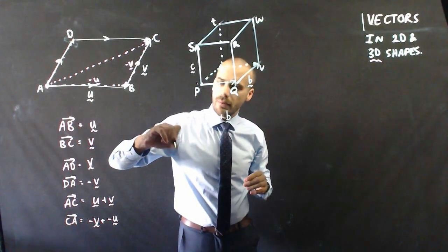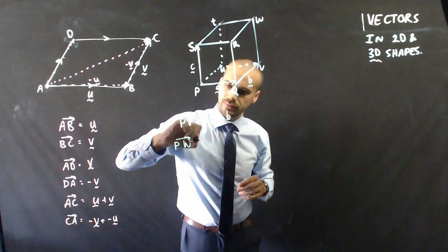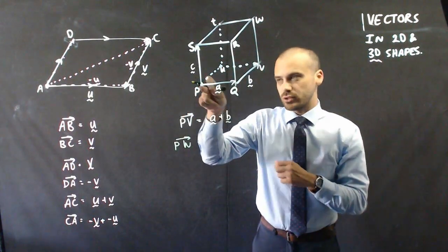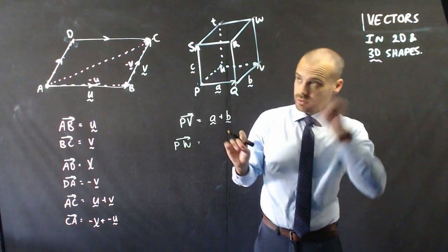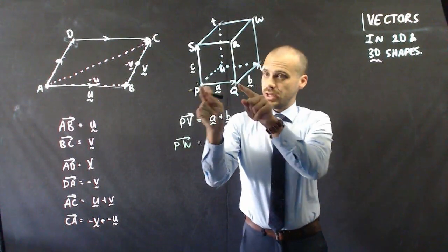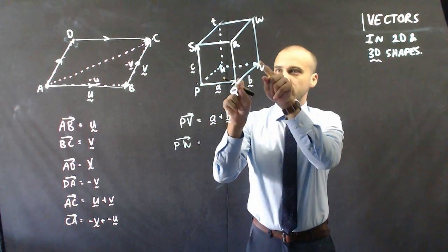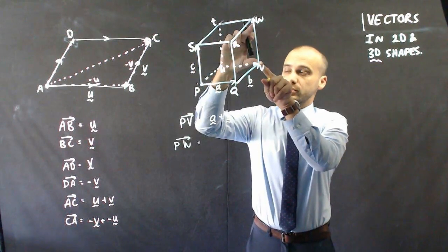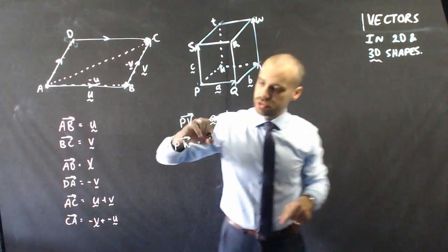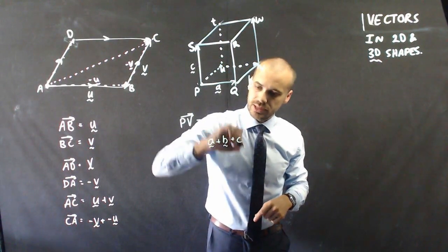Now we can start moving into that three dimensional stuff and saying, well what about from p to w? From this front corner to this back corner here right through the middle of the rectangular prism. Well if we take a, if we were to travel along a and then travel along b and then travel along c, because remember that's c so that's also c, it's just going to be a plus b plus c.